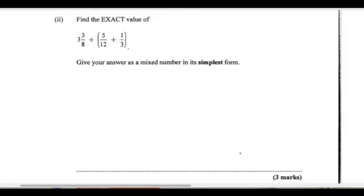Calculate the exact value of. Even though I can use my calculator for this, I may not need to, because 5 over 12 plus 1 over 3 — well, 1 over 3 could be seen as 4 over 12, because 3 times 4 is 12, and 1 times 4 is 4. So now I could add the 5 and the 4 to get 9 over 12.